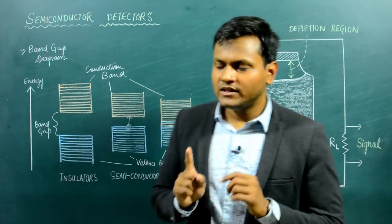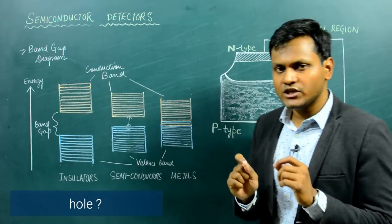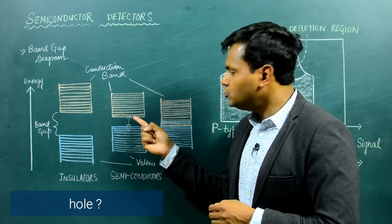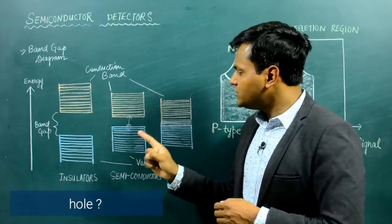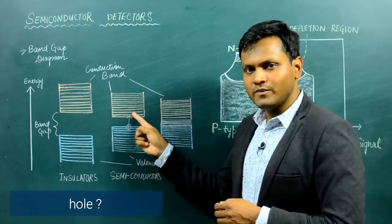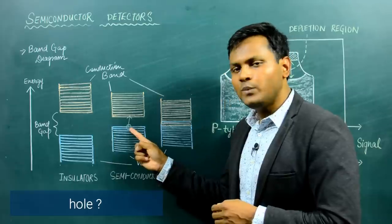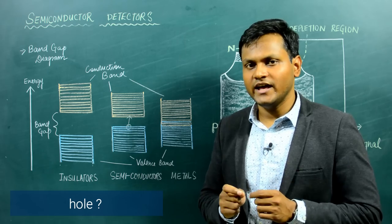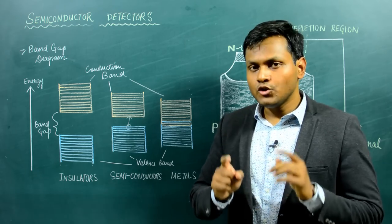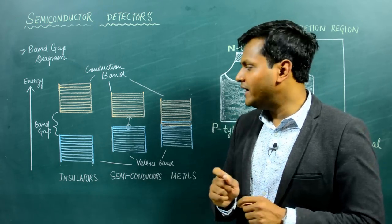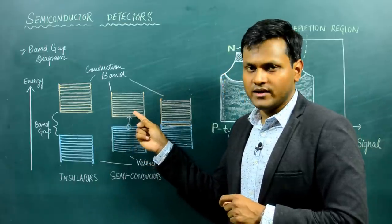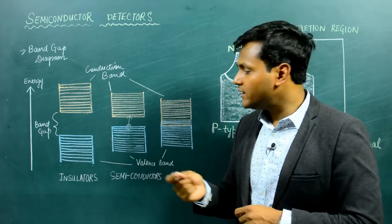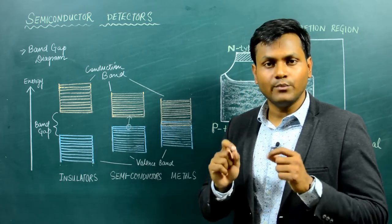What are holes? Whenever there is sufficient energy due to thermal excitation, the electrons in the valence band can jump to the conduction band. When an electron jumps from the valence band to the conduction band, it leaves in its place a vacancy. This vacancy acts as a positive charge carrier and is known as a hole. So a hole is the vacancy left behind when an electron jumps from the valence band to the conduction band. The electron in the conduction band is a negative charge carrier and the hole in the valence band is a positive charge carrier.